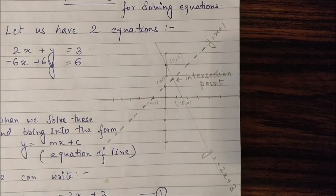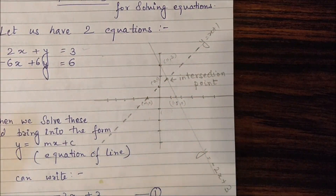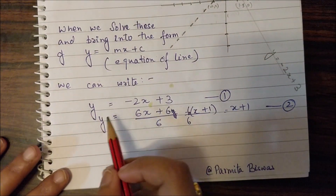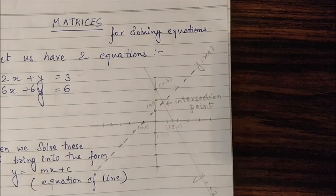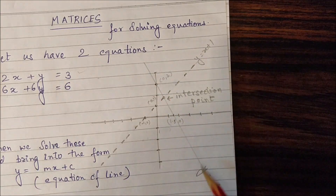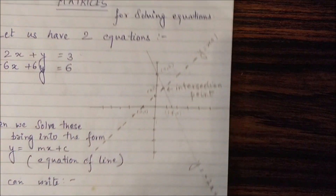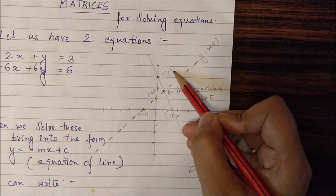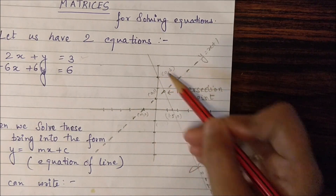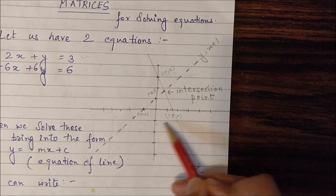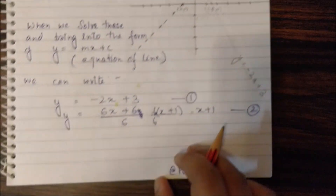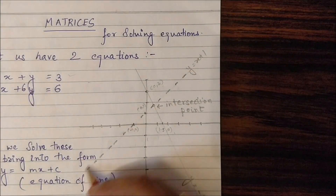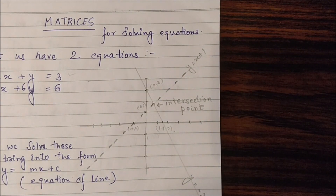Now let's plot these in the form of a graph. For y equals minus 2x plus 3, we find two points: when x equals 0, y equals 3; and when y equals 0, x equals 1.5. So we plot the first line. Similarly, for y equals x plus 1, we plot the second line.